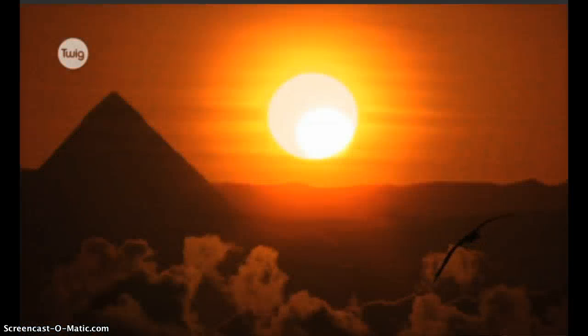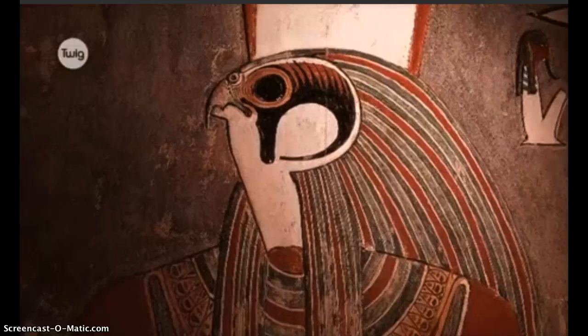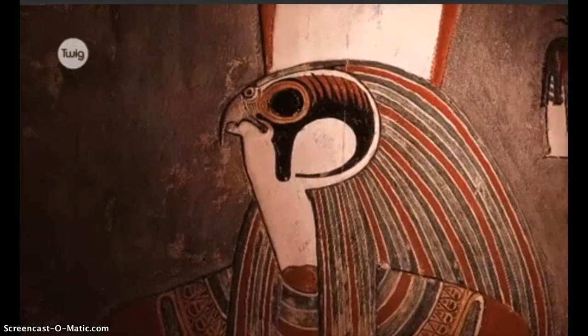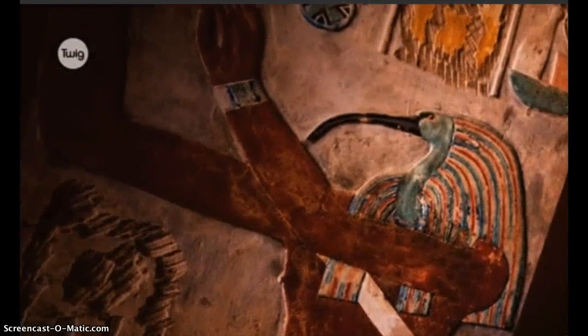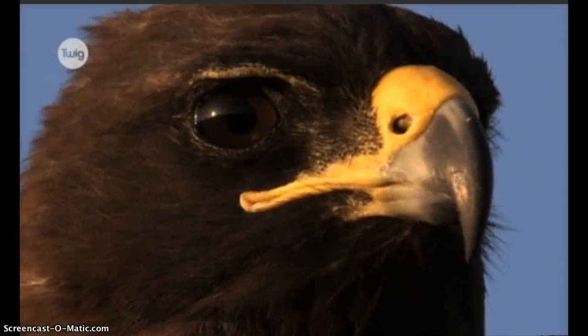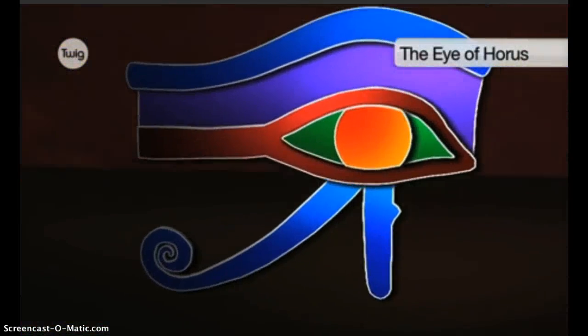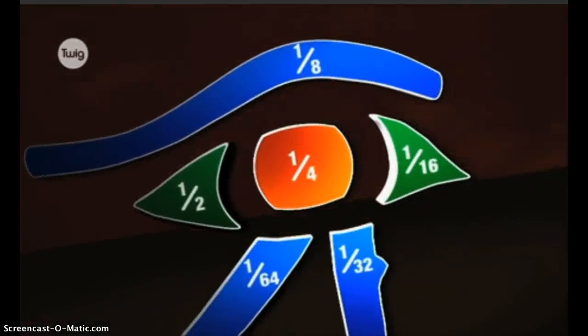The hawk god Horus was worshipped throughout ancient Egypt. Legend has it that Horus's left eye was ripped out in battle, but reinstated by the ibis-headed god Thoth. The eye of Horus became a symbol of wholeness or completeness, while the parts of his eye were used to denote fractions.